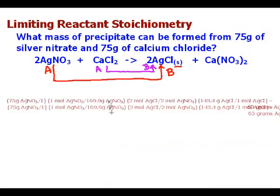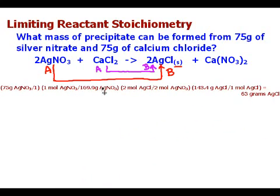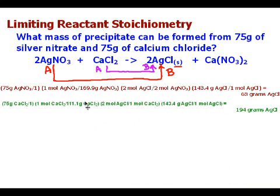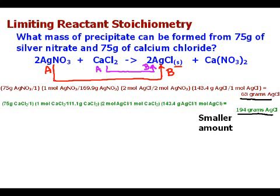Here's what those equations look like all written out. Go ahead and calculate everything out there and we will see that for the first one we get 63 grams of AgCl produced. Using the second one, the calcium chloride, then we get 194 grams of AgCl produced. When we look at this, both of those numbers can't be correct. When we're doing a limiting reactant problem, we're going to use the smaller amount of product. And in that case, it's 63 grams of AgCl.